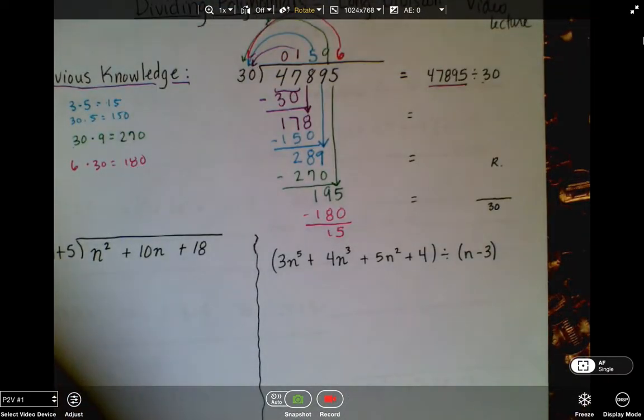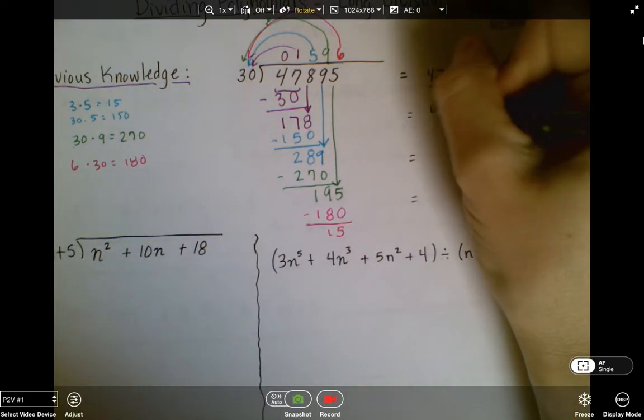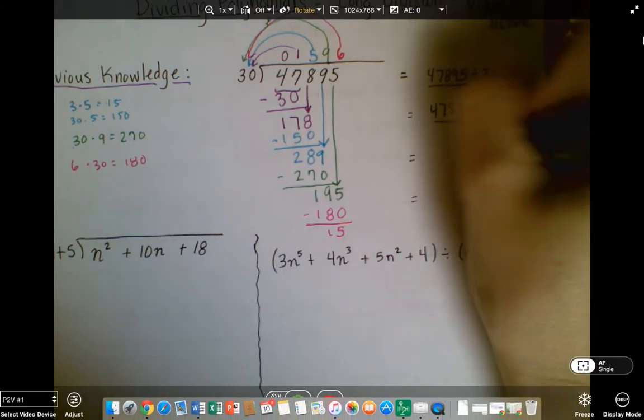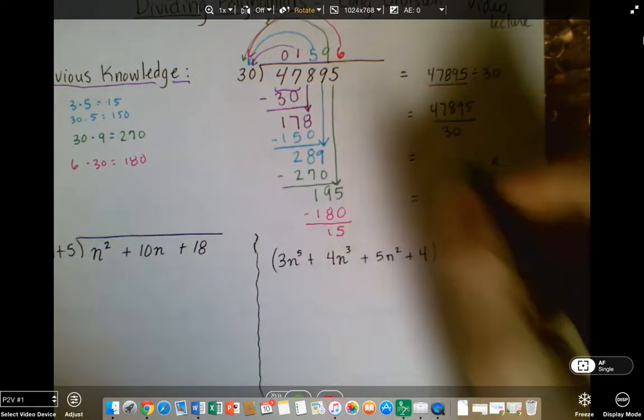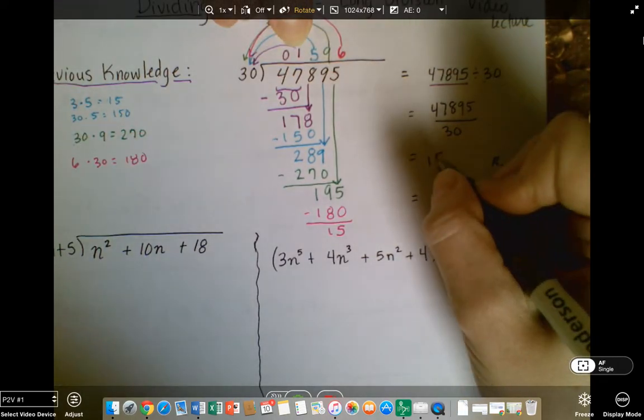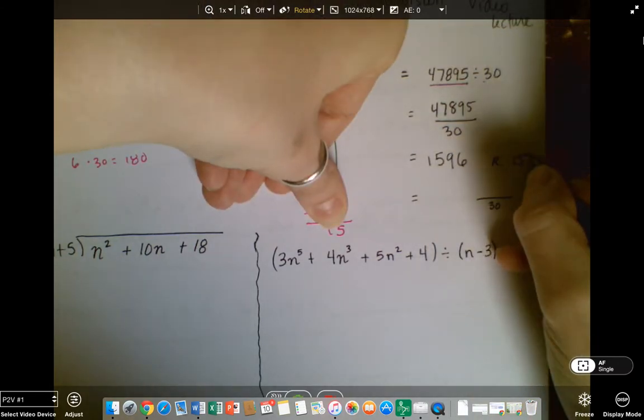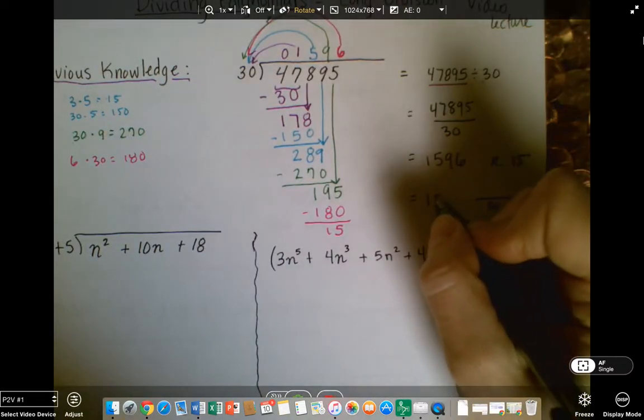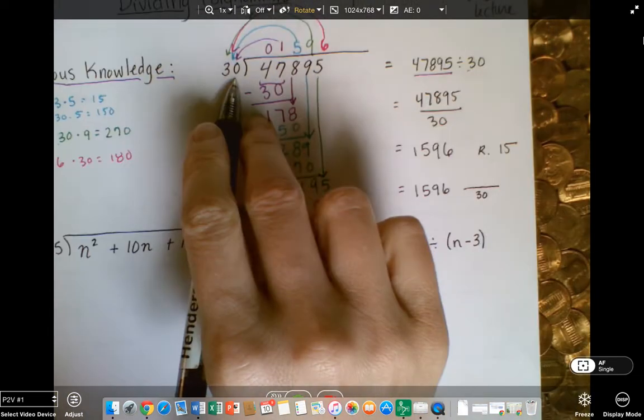So I'm going to take it and write down what I have right here. So this is the same as 47,895 divided by 30. It could also be written as a fraction. And then that could also be written as 1,596 remainder 15.